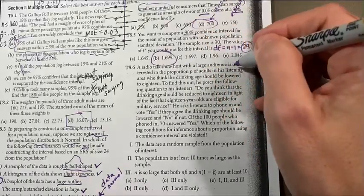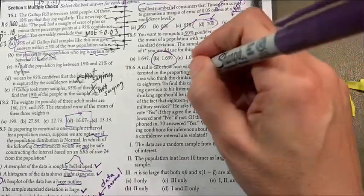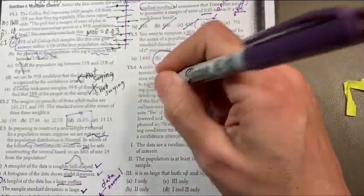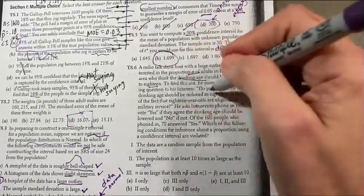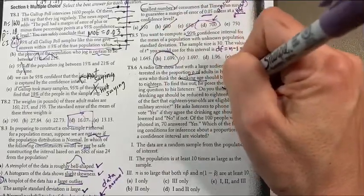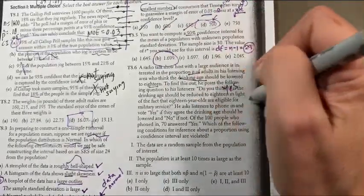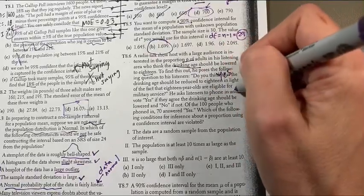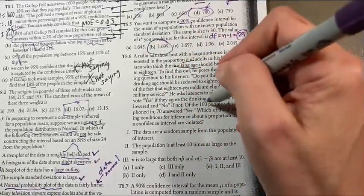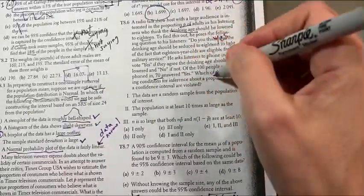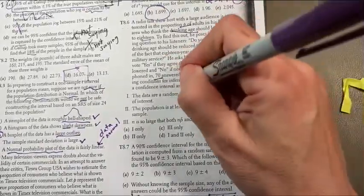A TV radio talk show host wants to know about a large audience's opinion on lowering the drinking age to 18. To find out, he poses a yes or no question: Do you think the drinking age should be restricted? Out of his listeners, some said yes, some said no. Of the 100, 70 said yes. Which of the following conditions about the proportion is violated?